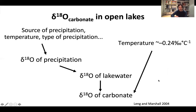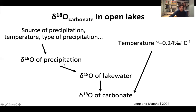In an open lake — where there is significant outflow, making it more of an open system — inflow and outflow keep the waters fresher. Without that evaporative modification of delta-18O in the lake water, what is influencing the oxygen isotope composition of the carbonate is the direct temperature effect, but also the oxygen isotope composition of the lake water influenced by the isotope ratio of precipitation — which itself is influenced by the source of precipitation, temperature, type of precipitation, and amount of precipitation.